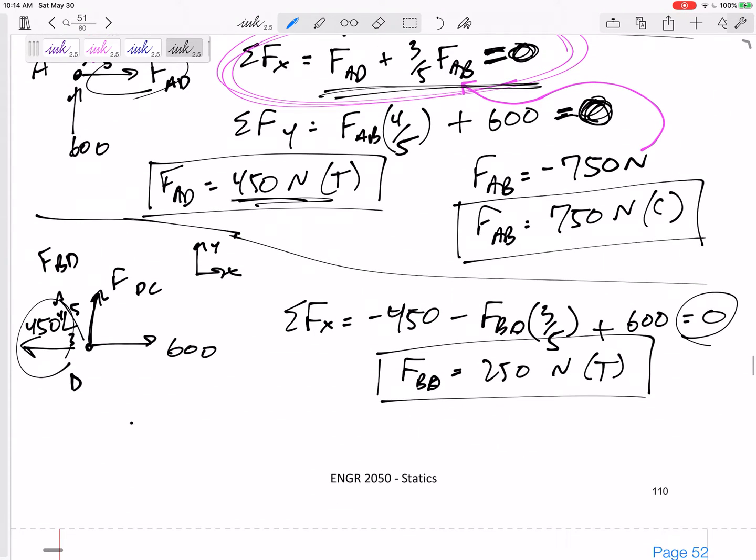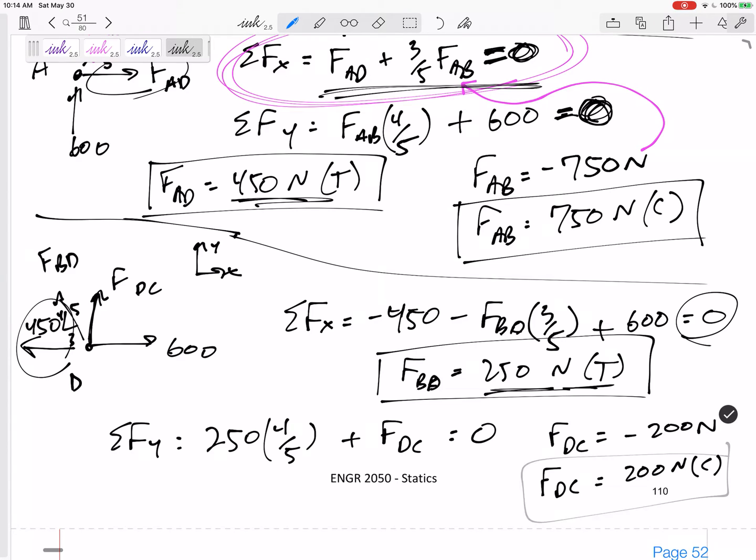And then, I can sum my forces in the Y direction. I just solved FBD, 250 tension. So it is, up the 4/5 component of 250 plus FDC, is equal to zero. So FDC, negative 200. So FDC is 200 newtons compression. It is actually pushing down on that joint. Box in 200 newtons compression.